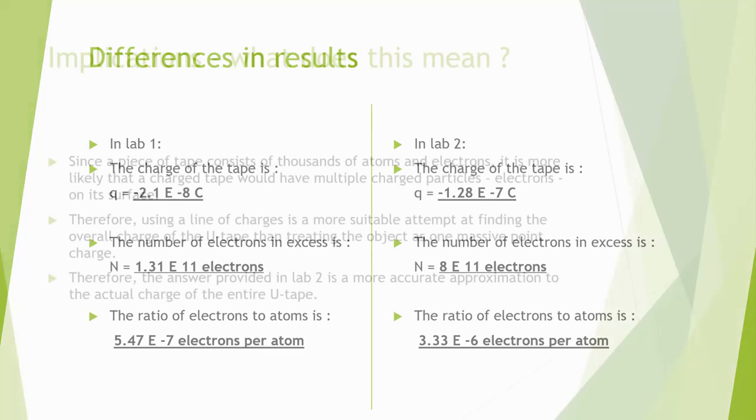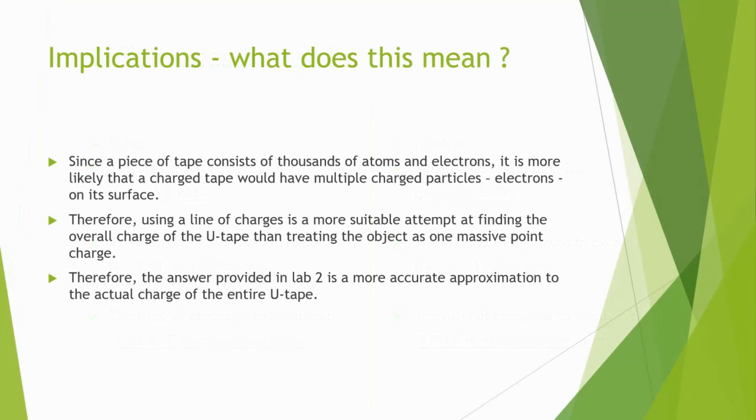Since a piece of tape consists of thousands of atoms and electrons, it is more likely that a charged tape would have multiple charged particles electrons on its surface. Therefore, using a line of charge is a more suitable attempt at finding the overall charge of the U-tape than treating the object as one massive point charge. To conclude, the answers provided in lab 2 is a more accurate approximation to the actual charge of the entire U-tape.